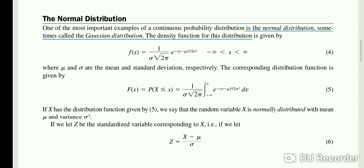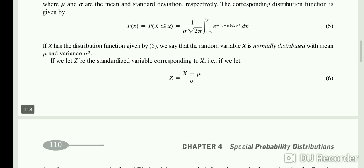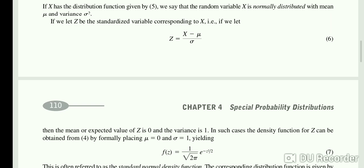If capital X has the distribution function given by equation 5, we say that the random variable X is normally distributed with mean μ and variance σ squared. If we let Z be the standardized variable corresponding to capital X, that is, if we let Z equals (X minus μ) over σ.